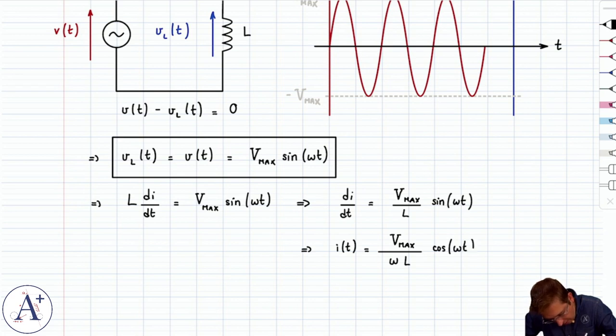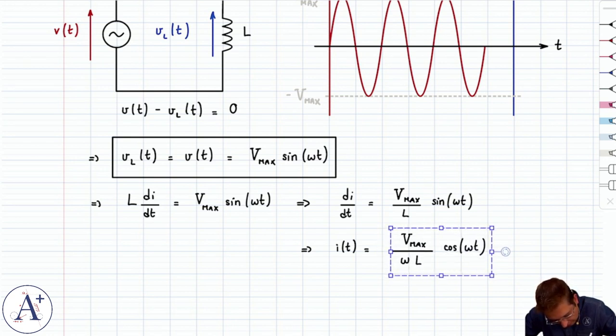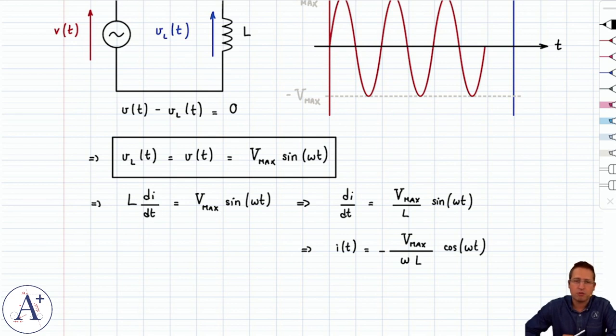Actually, minus cosine of ωt is the antiderivative, so we get minus Vmax over ωL cosine(ωt).